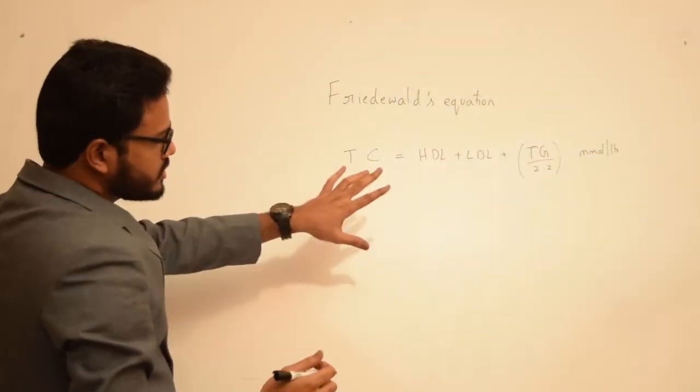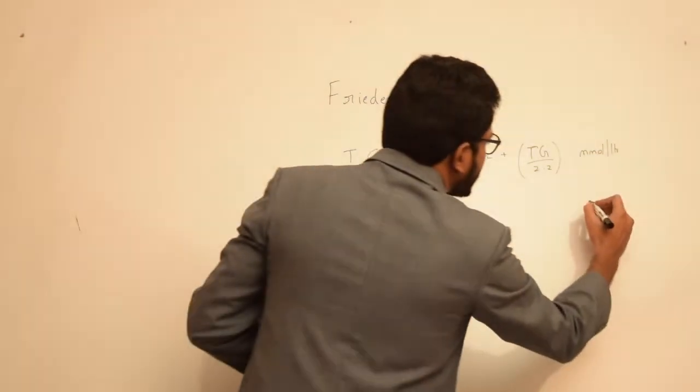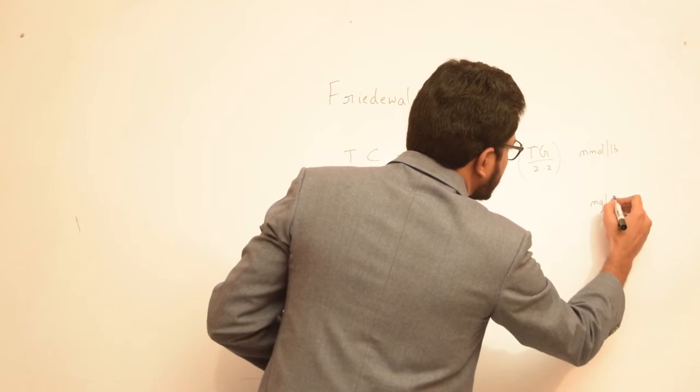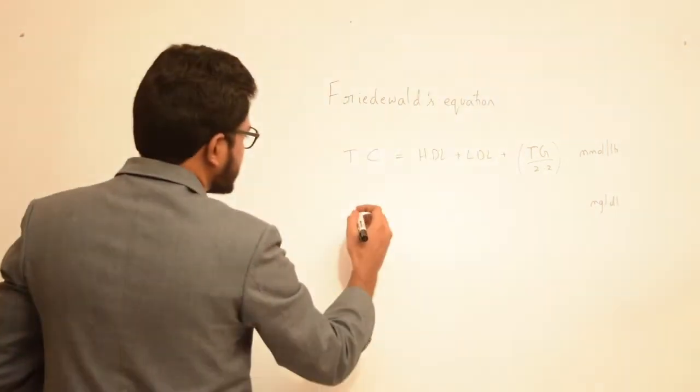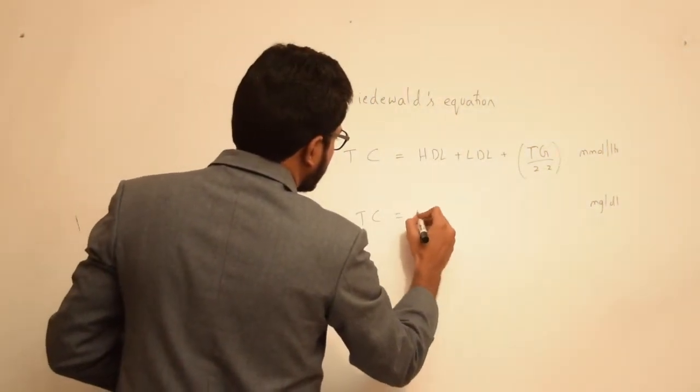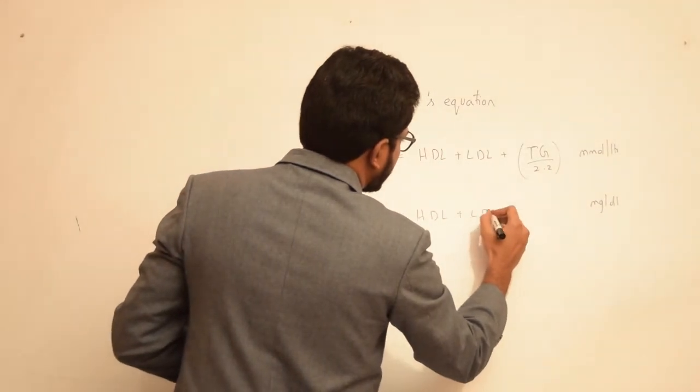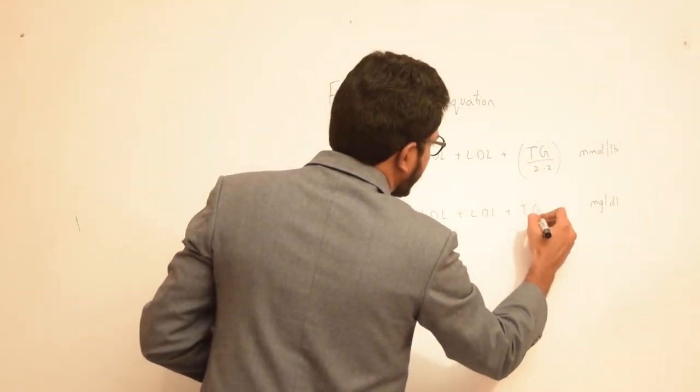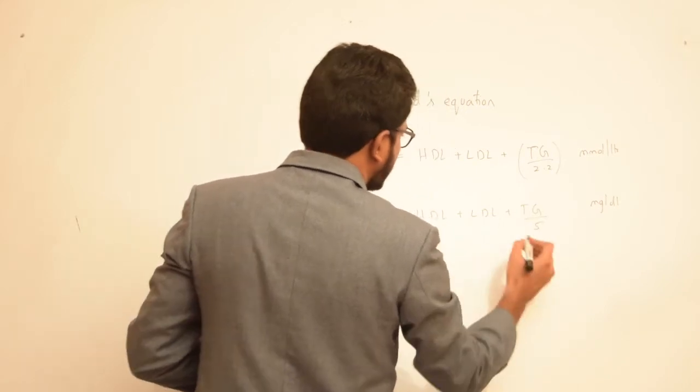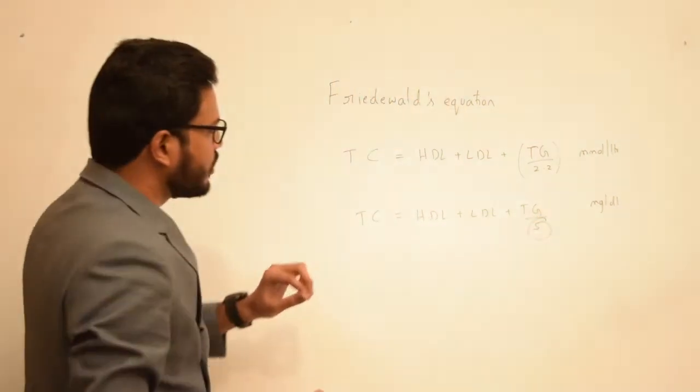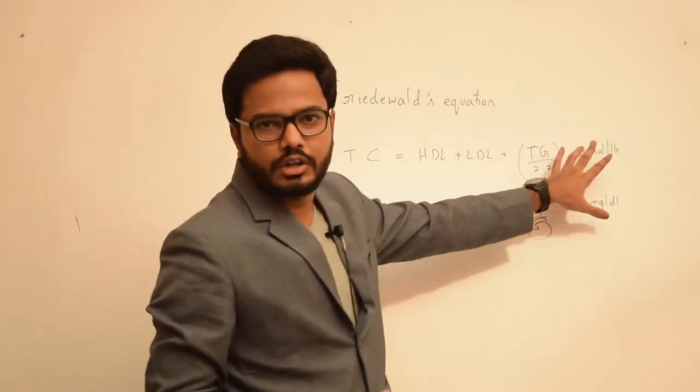On the other hand, if the units of measurement are in milligrams per deciliter, then we will use the same formula. However, we have a variation here: triglycerides divided by 5. So this varies depending upon the units of measurement of cholesterol.